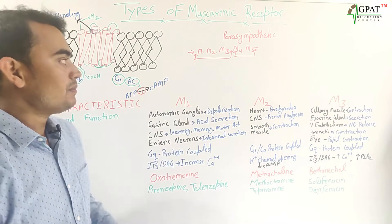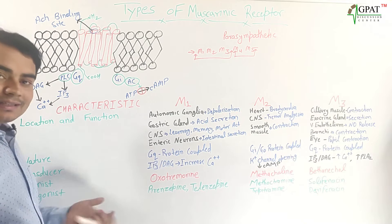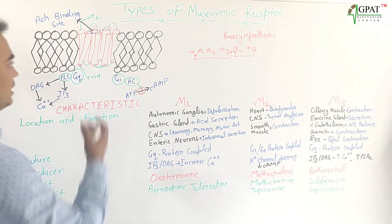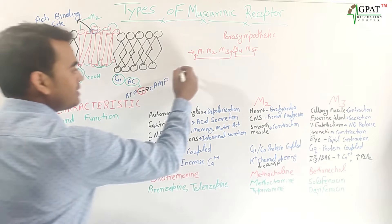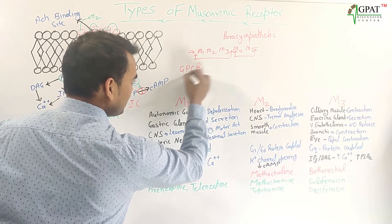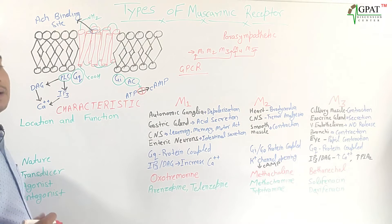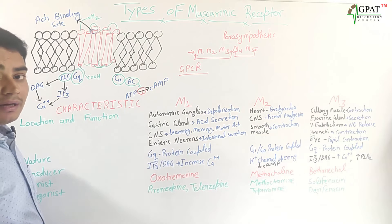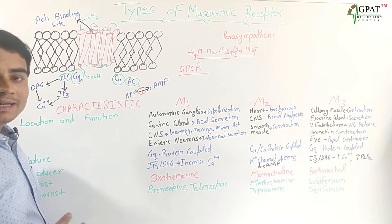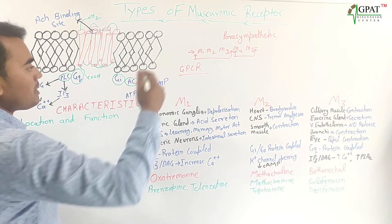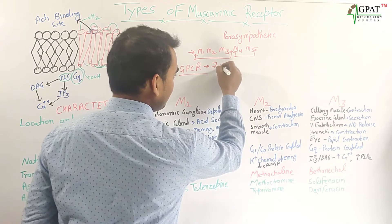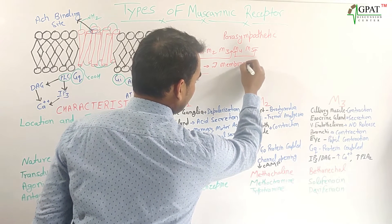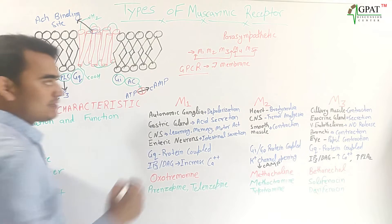Before starting these receptors, just have a look at the characteristics diagram — I have summarized all the diagrams here. These muscarinic receptors are GPCRs — G protein-coupled receptors. GPCRs are transmembrane receptors located on the membrane, with an extracellular binding domain for the agonist and an intracellular domain for the effector pathway. These GPCRs have seven transmembrane domains, making them heptahelical receptors.